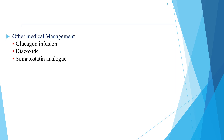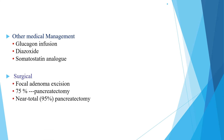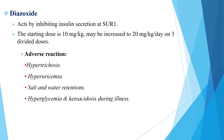Other medical managements include glucagon infusion, diazoxide, and somatostatin analogs. Indications for surgical management in hyperinsulinism include focal adenoma resection and partial or near-total pancreatectomy. Diazoxide acts by inhibiting insulin secretion; the starting dose is 10 mg/kg/day and may be increased to 20 mg/kg/day in three divided doses. Adverse reactions to diazoxide include hypertrichosis, hyperuricemia, salt and water retention, hyperglycemia, and ketoacidosis during illness.